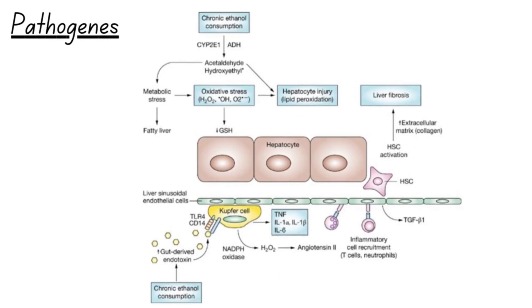Understanding the pathogenesis of alcoholic liver disease is essential. When alcohol is consumed, it is absorbed by the intestines and reaches the liver through the portal system. Alcohol metabolism within liver cells leads to oxidative stress and increased lipid peroxidation. Additionally, acetaldehyde, a metabolic end product of alcohol, triggers an inflammatory process.